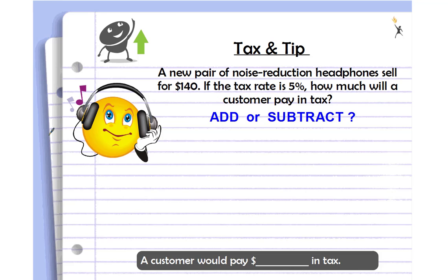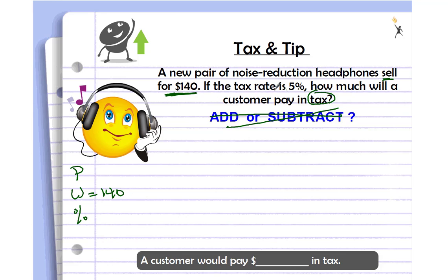A new pair of noise reduction headphones sells for $140. If the tax rate is five percent, how much will a customer pay in tax? We're not looking for the total cost, just the tax amount, so there's no need to add or subtract. Let's do our part, whole, and percent. The whole is the cost of the headphones: $140. The percent is the tax rate: five percent.